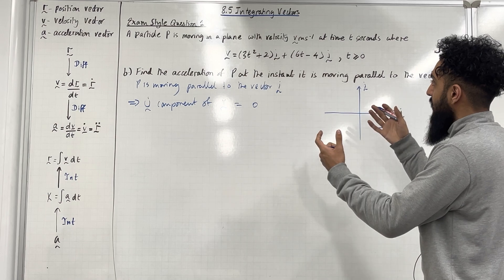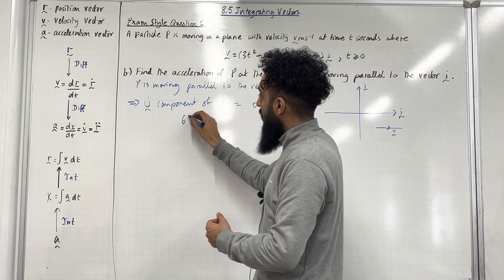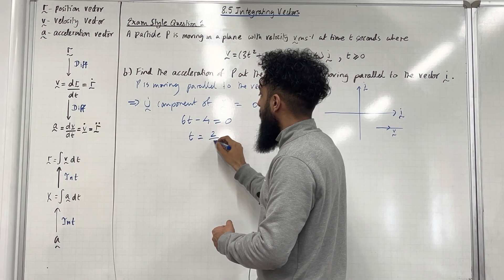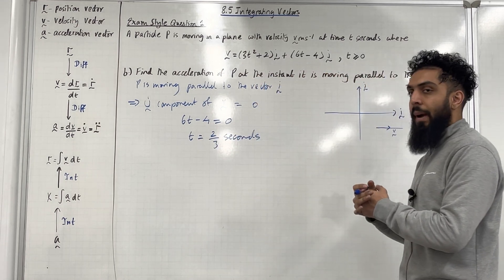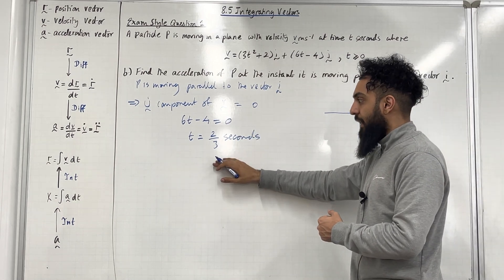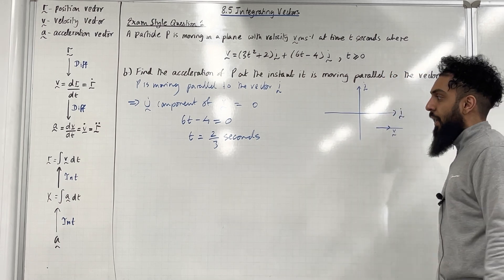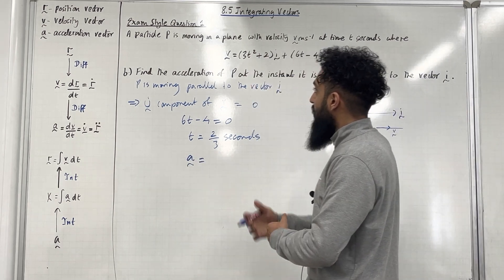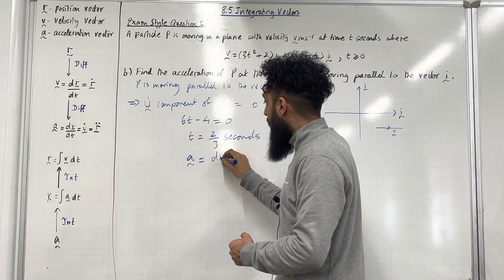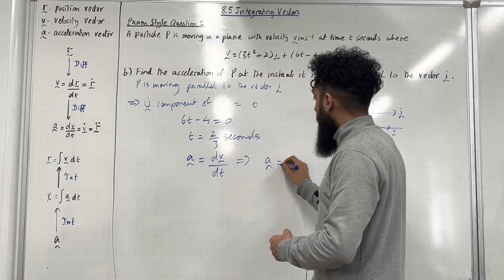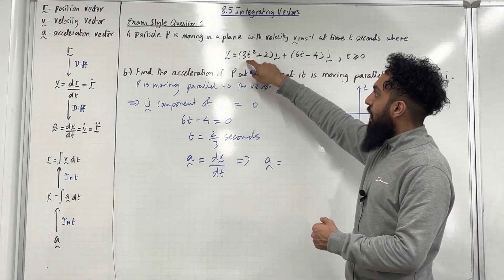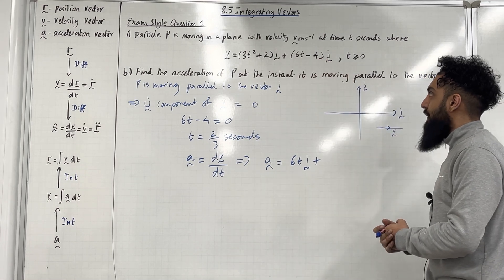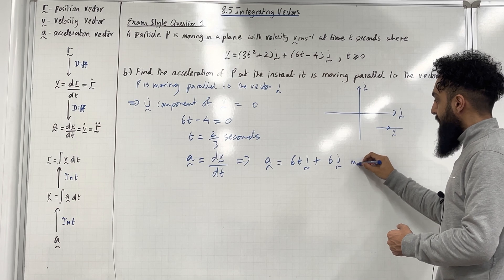Going back to the velocity vector, the J component is 6T minus 4. So 6T minus 4 must equal 0, giving T equals 2 over 3 seconds. So when P is moving parallel to vector I, T equals 2 over 3 seconds. To find the acceleration, we differentiate the velocity vector with respect to time. The acceleration vector equals the derivative of (3T squared plus 2), which is 6T, times I, plus the derivative of (6T minus 4), which is 6, times J, in meters per second squared.